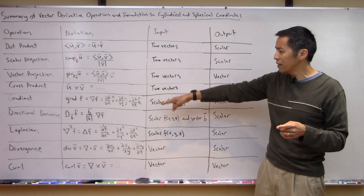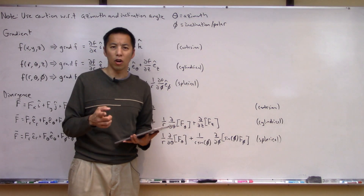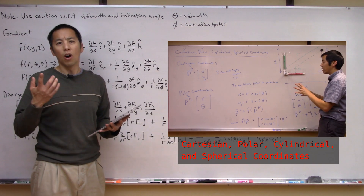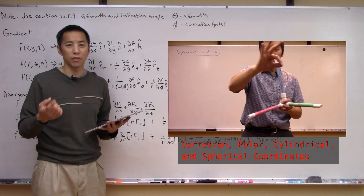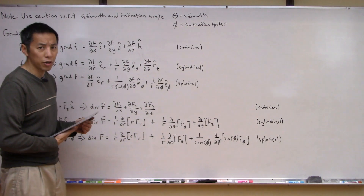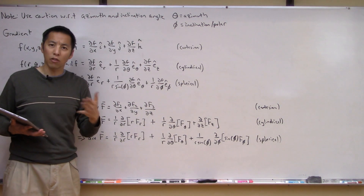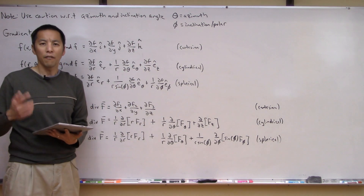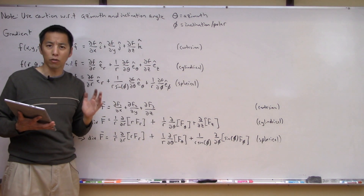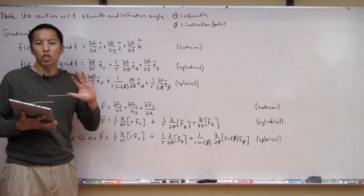Now let's look at these operations in cylindrical or spherical coordinates. I want to spend a couple minutes looking at a few of these operators in non-Cartesian coordinates — specifically polar/cylindrical and spherical coordinates. Make sure you've watched the previous video on transformations between Cartesian, cylindrical, and spherical coordinates. I'll continue using notation consistent with that video: theta denotes the azimuth angle and phi denotes the inclination or polar angle. Note that other references like Wikipedia may use different notation, so just be careful and consistent.